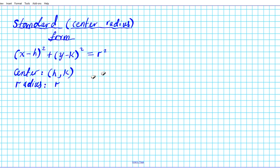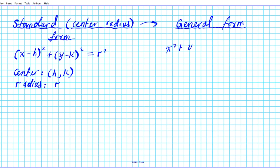Our goal in this presentation is to go from the standard form into a form known as the general form. The general form of the equation of a circle is given by X squared plus Y squared plus AX plus BY plus C equals 0.